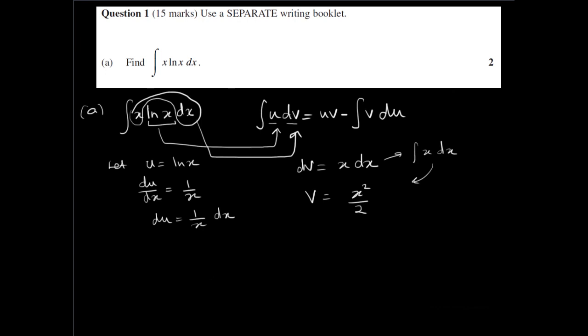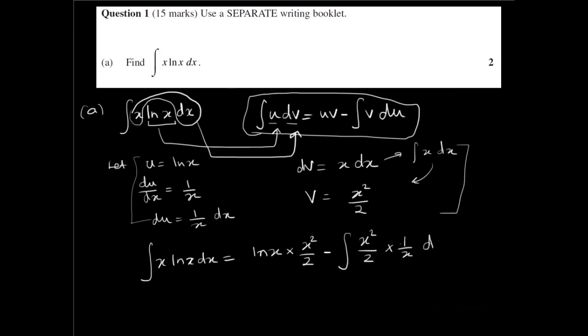Okay, so I'm going to plug these values into this formula here. So I get integral of x ln(x) dx equals u times v, so that's u is ln(x) multiplied by v which is x squared over 2, minus the integral of v which is x squared over 2, du which is 1 over x dx.